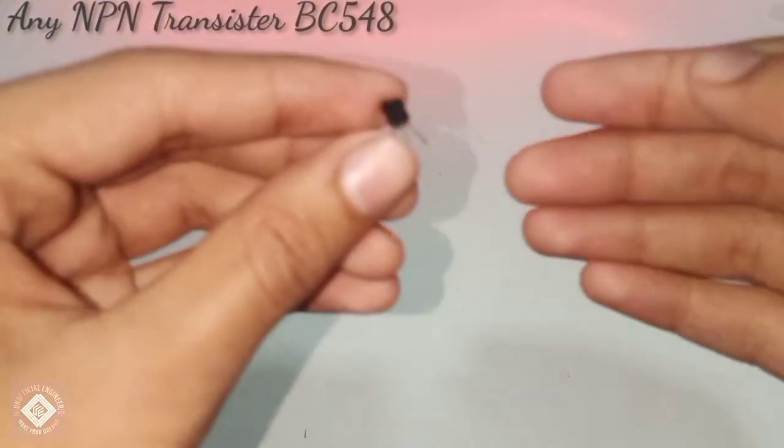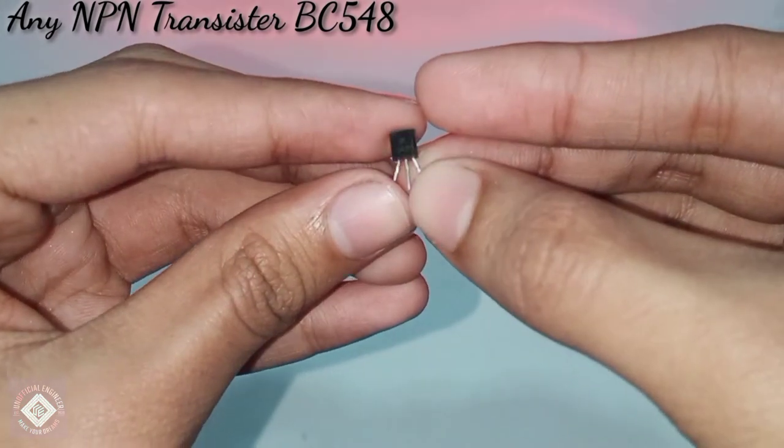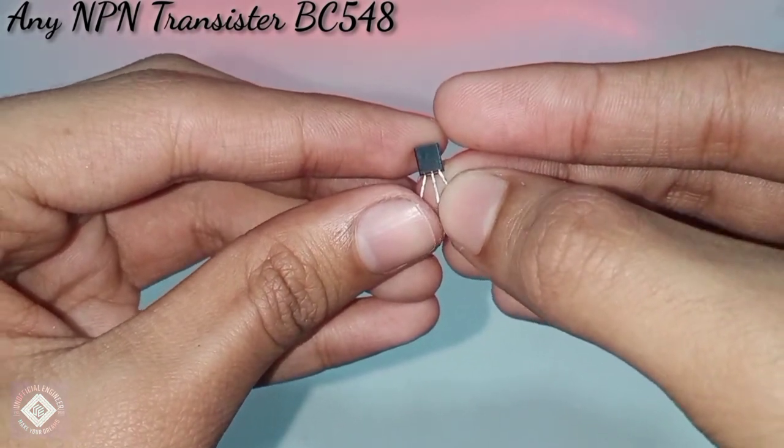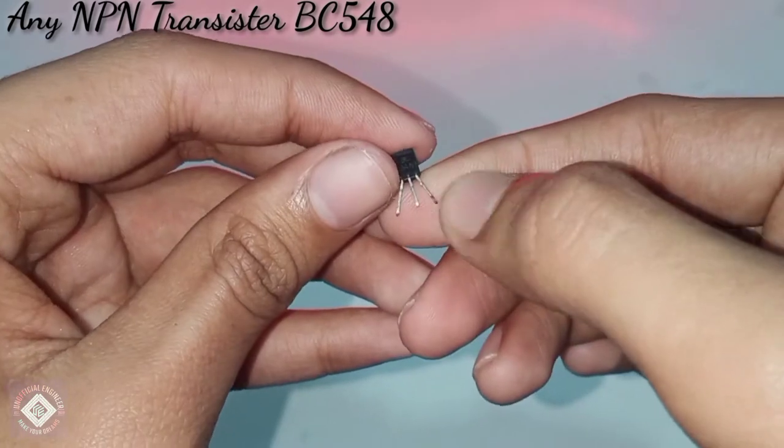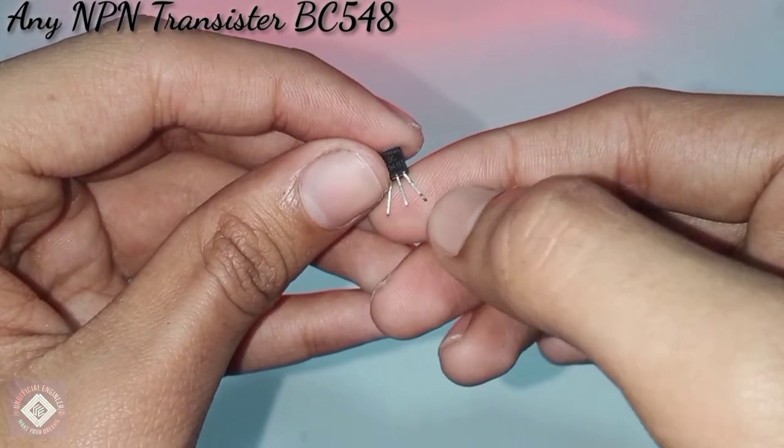From the datasheet I can see the alternative. I have BC548, so I will use it. Hello engineers, to make this project I am using BC548, any NPN transistor. You can use BC547, just the values of resistors and capacitors I'm using will differ.